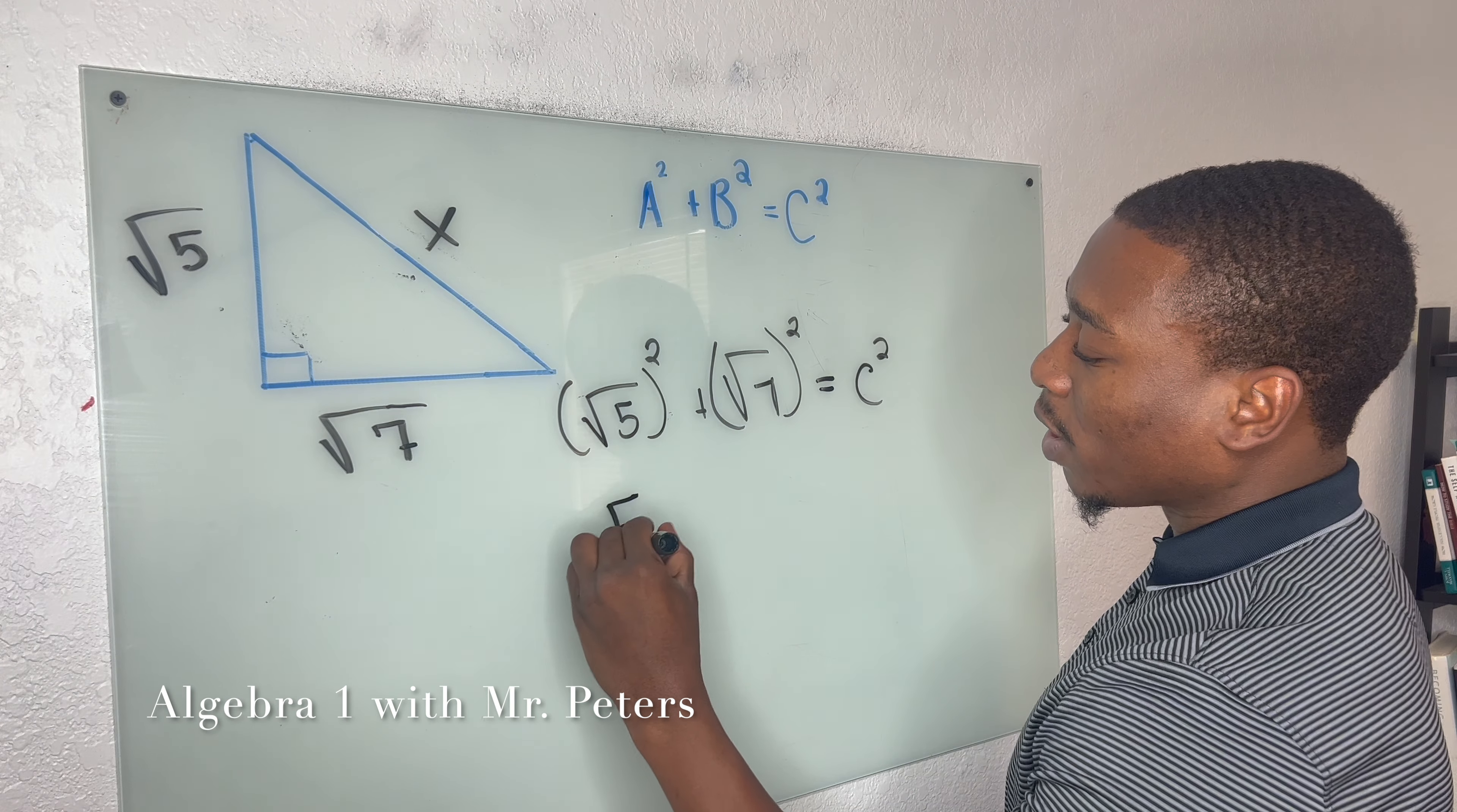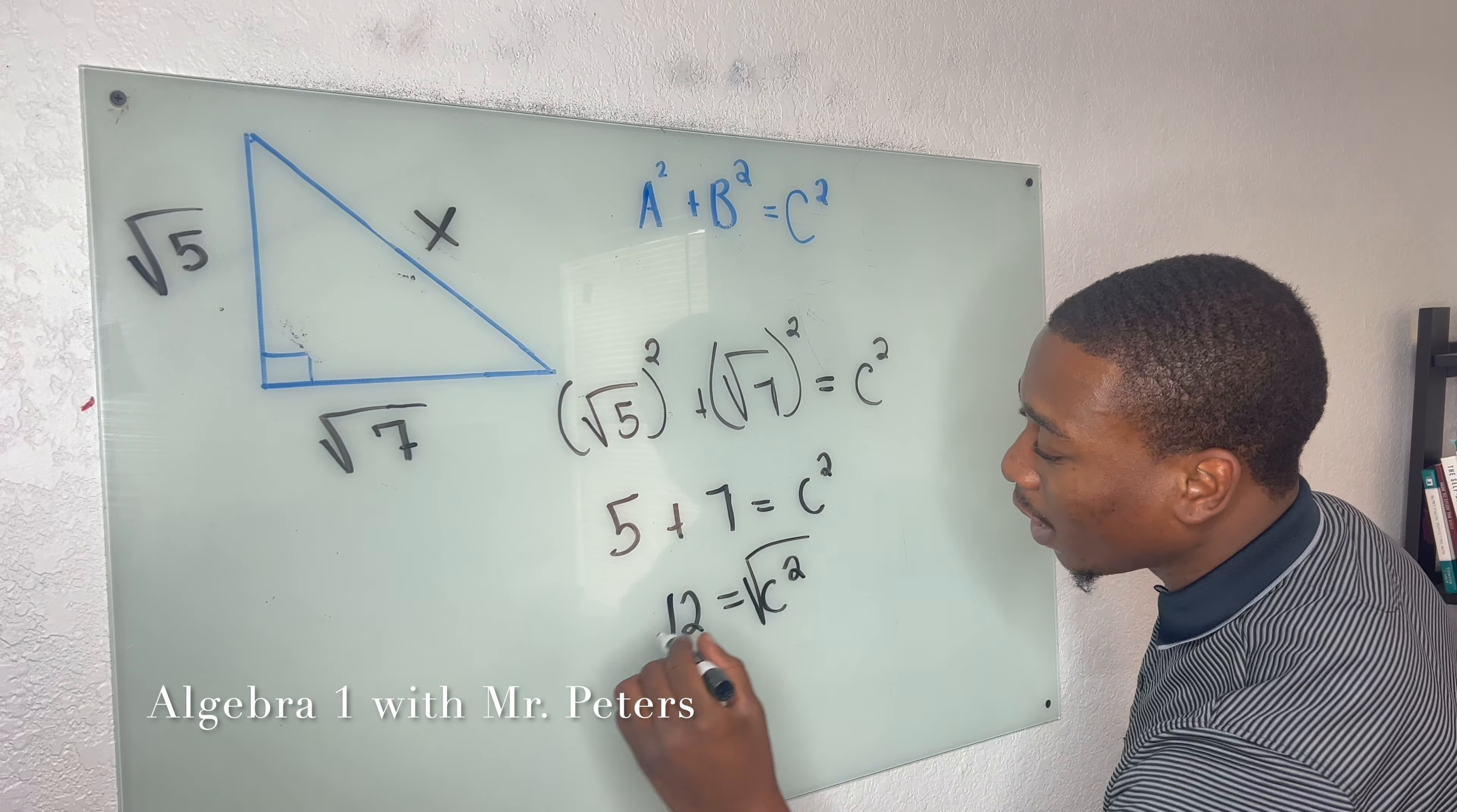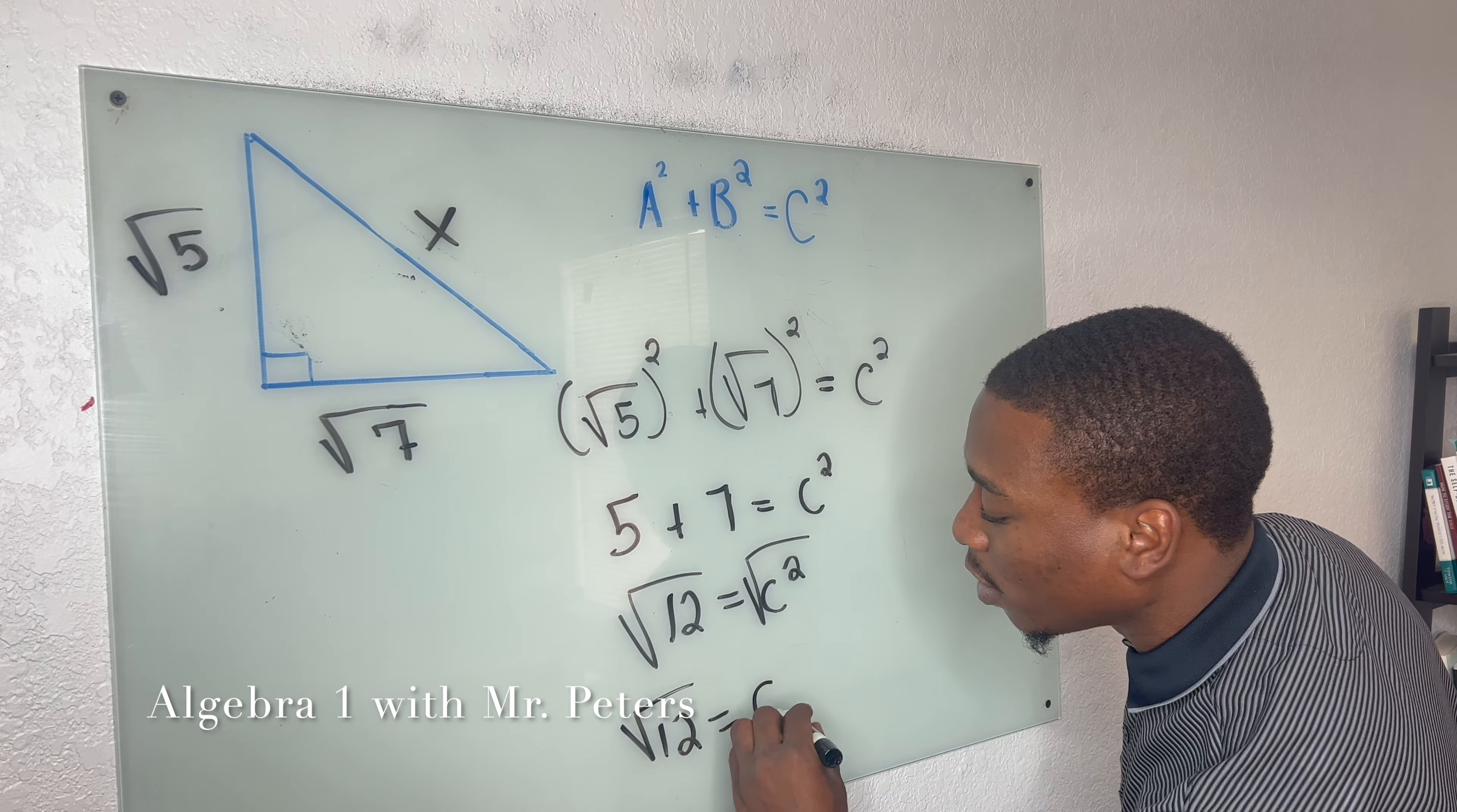What this turns out to be is 5 plus 7 is equal to C squared. When we combine these two, we're going to get 12 is equal to C squared. Once we take the square root of both sides, we're going to get radical 12 is equal to C.